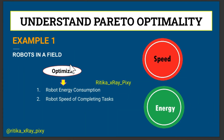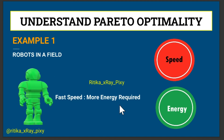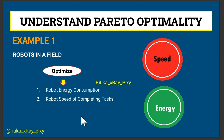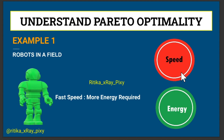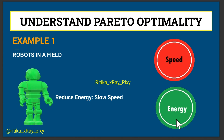Let's understand this using an example. Imagine you have robots working in a field and you want to optimize two things: first, robot energy consumption, and second, robot speed of completing tasks. We need energy consumption to be low and speed of completing tasks to be higher. These two objectives are conflicting because if a robot works faster, it likely consumes more energy — if you increase the speed, it will consume more energy.